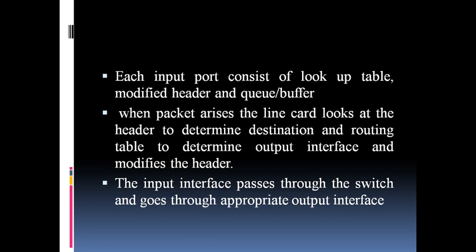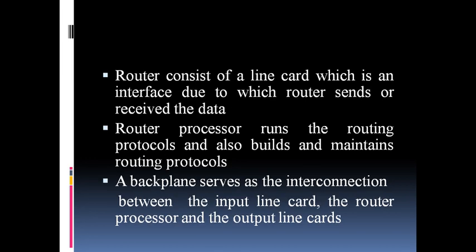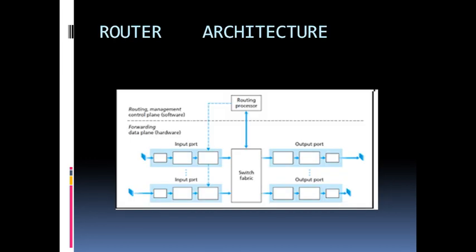The incoming interface consists of lookup table, modified header, and queue buffer. As you can see in this diagram, the input port consists of three blocks: the first block consists of lookup table, second modified header, and then it goes to the buffer.